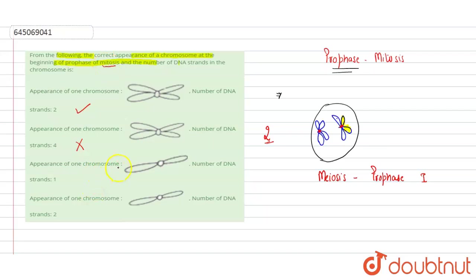An appearance of one chromosome with the number of DNA strands as one would be the case of anaphase, so that option is also incorrect. The correct option is option A. Hope you got it, thank you.